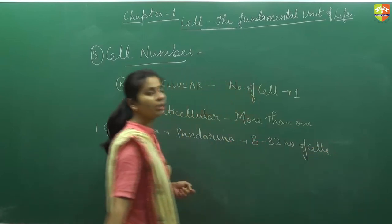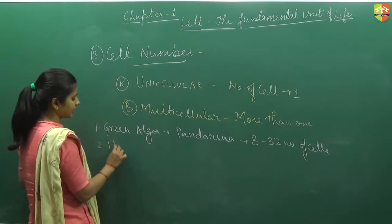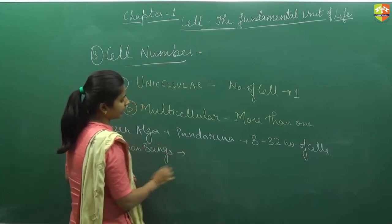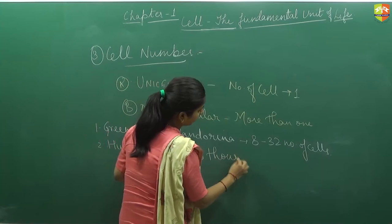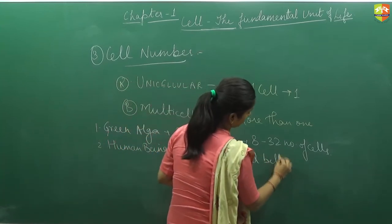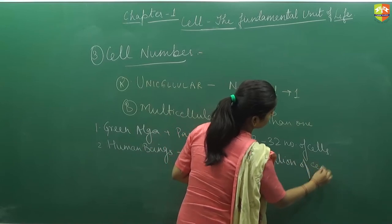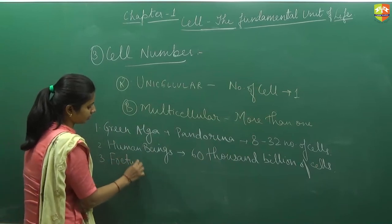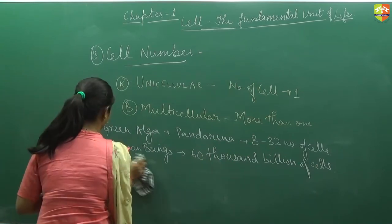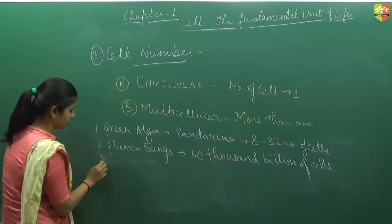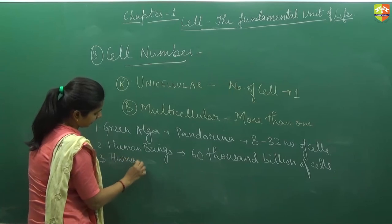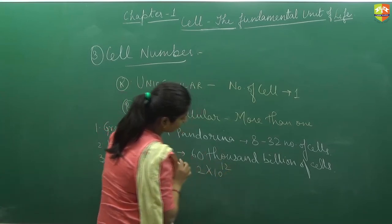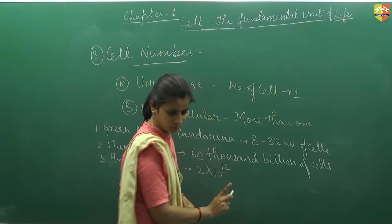In case of human beings, that is our case, human beings contains 60,000 billion of cells. Remember this number, 60,000 billion of cells. Now third, human infant, that is newly born baby, 2 into 10 to the power 12 cells.